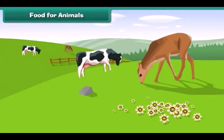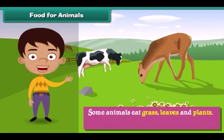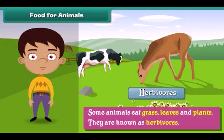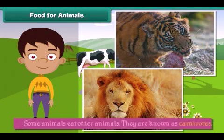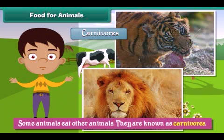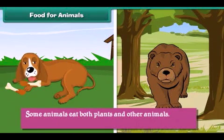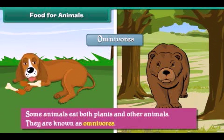Let us learn about what animals eat. Some animals eat grass, leaves and plants; they are known as herbivores. Examples of herbivores are cows, deer, etc. Some animals eat other animals; they are known as carnivores. Examples of carnivores are lions, tigers, etc. Some animals eat both plants and other animals; they are known as omnivores. Examples of omnivores are bears, dogs, etc.